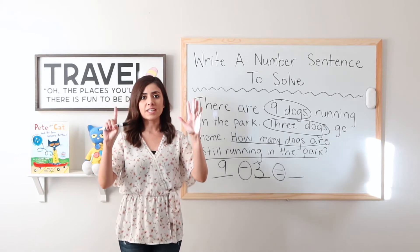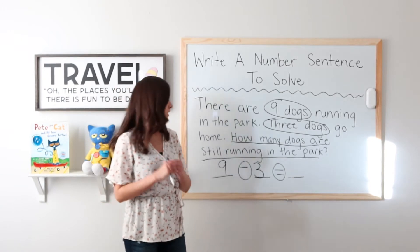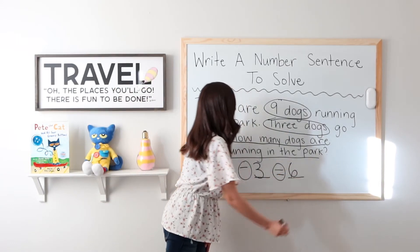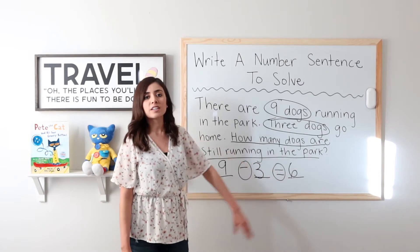How many fingers did it take? Six. That means that nine minus three equals six. There are six dogs still running in the park. Very good.